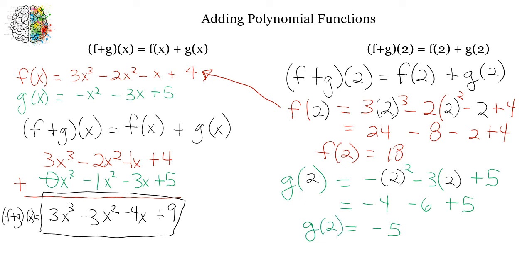So now when I go to take my f of g, f plus g of 2, that is going to be f of 2, which was 18, plus my g of 2, which was a minus 5, and that is going to give me 13. So f plus g of 2 is going to be 13, which would be my final answer.